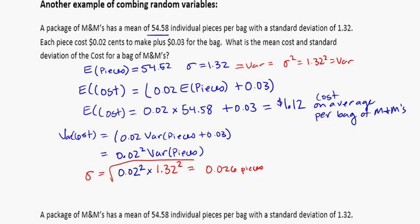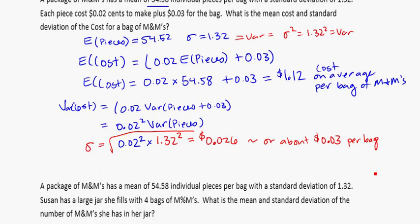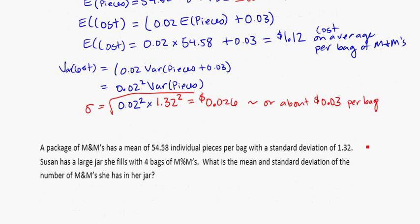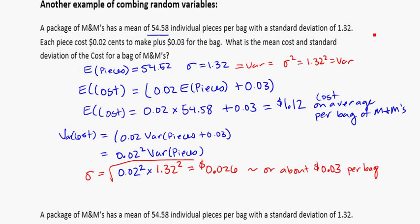Oops, sorry it's not pieces. This is the variance for the cost, and we want to round reasonably because this is money, so we would say about 0.03 cents per bag. And again that's because the number of M&Ms in each bag is going to be slightly different, and if you have to pay for each M&M they make, that's where the variation of the cost of each bag comes into it.